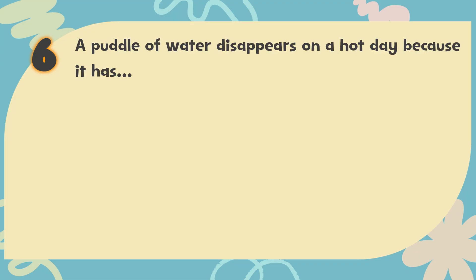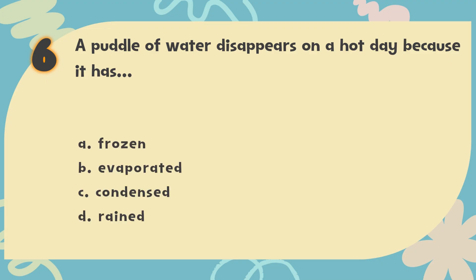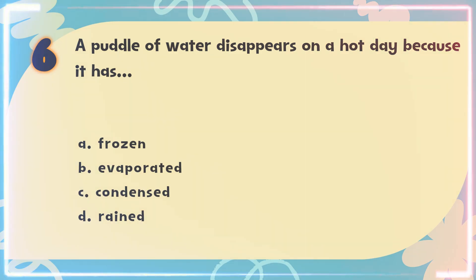Number 6: A puddle of water disappears on a hot day because it has blank. The choices are: A. Frozen, B. Evaporated, C. Condensed, D. Rained.